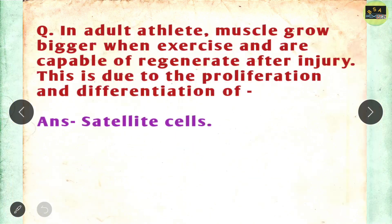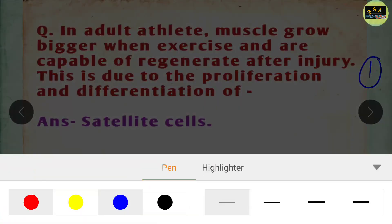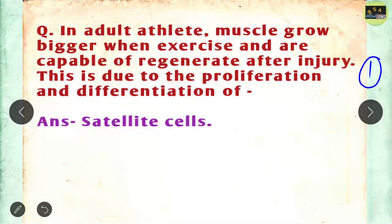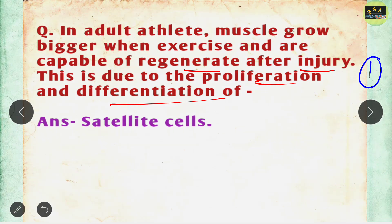The next question is from the zoology section and is also a one-mark question. It asks: in an adult athlete, muscles grow bigger when exercised and are capable of regenerating after injury. This regeneration is due to the proliferation and differentiation of which cells? The correct answer is satellite cells.